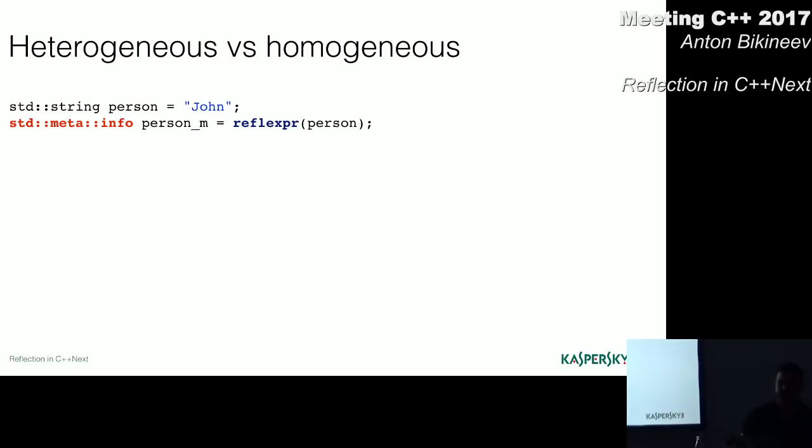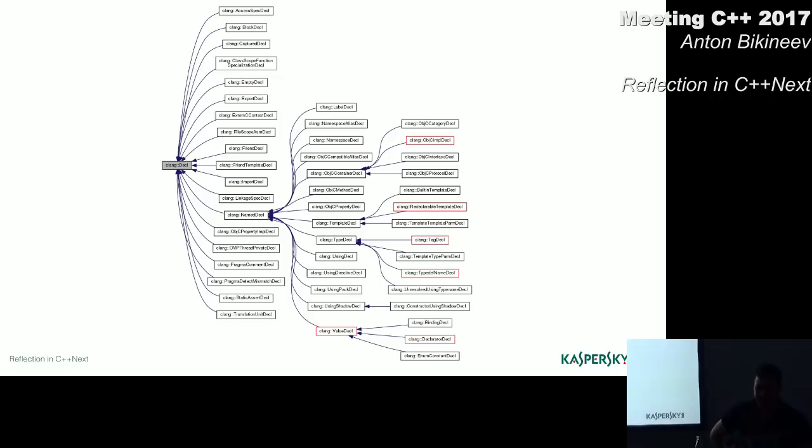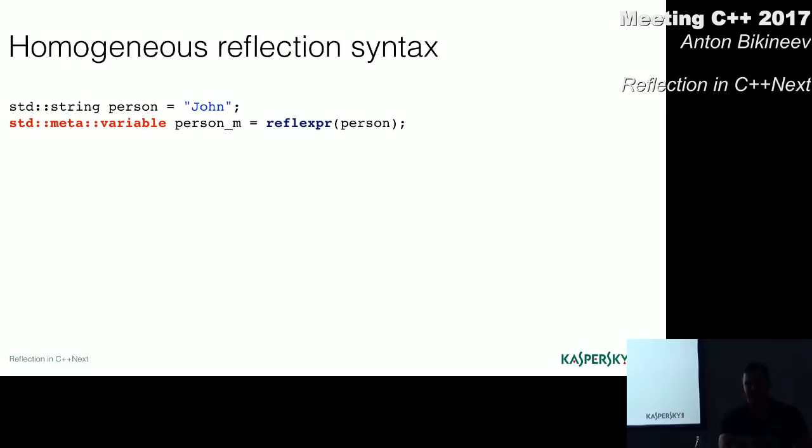Instead of having a different type for each reflected entity, this idea proposes have been just a single type or finite set of types for all metadata. And in the compiler implementation, this type itself may be just a pointer to the AST node. I'll also use the reflexpr operator instead of the dollar sign, because later we will see a reverse operator with similar syntax.